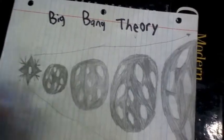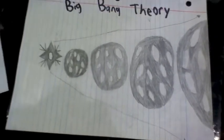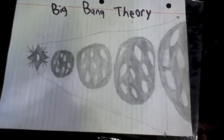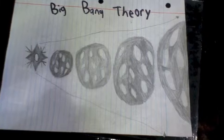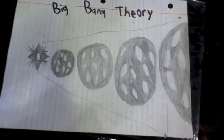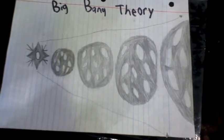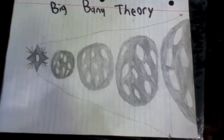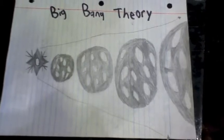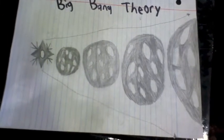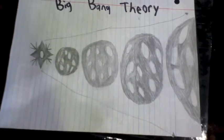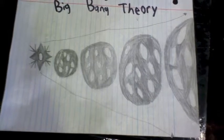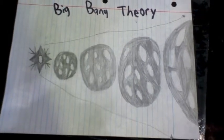An example of a theory would be the Big Bang Theory. It is a theory that states that the universe was confined to a single point and then expanded over time. This expansion led to the universe as we know it. Since it hasn't been proven wrong, the Big Bang Theory is still considered true.